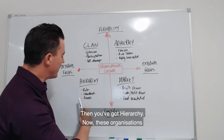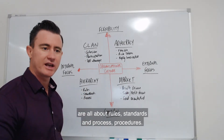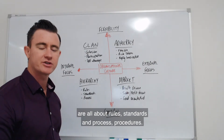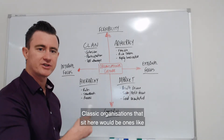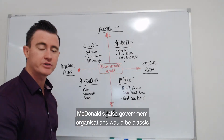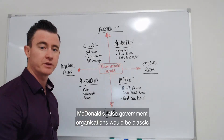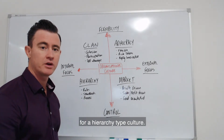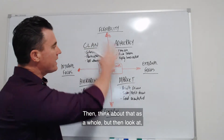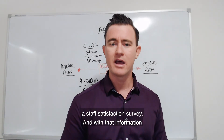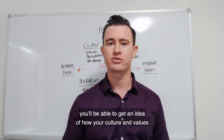The next one is adhocracy — Apple comes to mind as an adhocracy. They're flexible, they're risk-takers, they're highly innovative, they're always ahead of the curve, and they're externally focused. The next one is market, which is classic for retail. They're results-driven, they're all about sales and profit, they're goal-orientated, and they're externally focused as well.